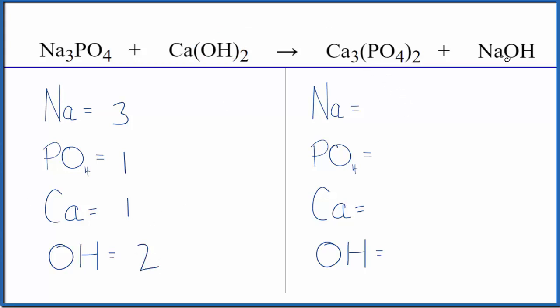On the product side, we have one sodium, one phosphate times two, so we have two of those, three calcium atoms, and then one hydroxide. You can see it's a lot neater when we count these polyatomic ions as just one item. Makes balancing a lot easier. Get the same answer either way.